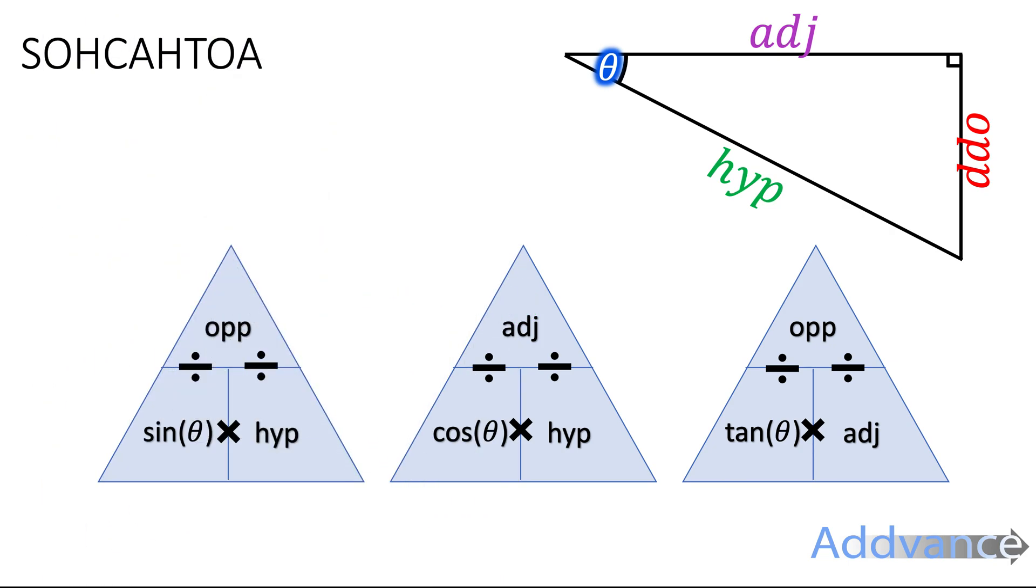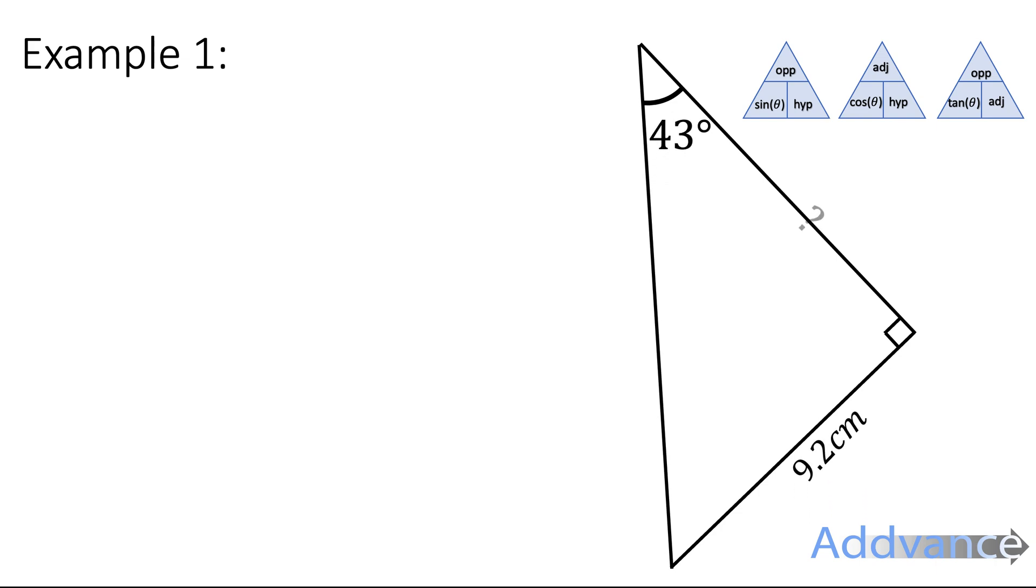Now, let's see this in action with example 1. Here we have a triangle, we have the 43 degrees labelled here, that's our angle, and we have 9.2 cm over here labelled. We want to find this length over here.